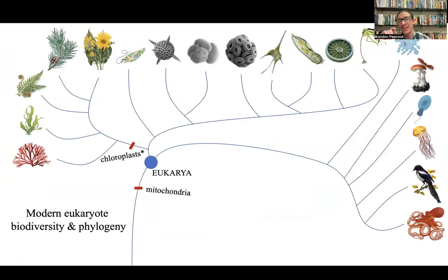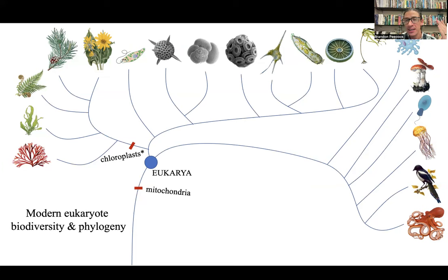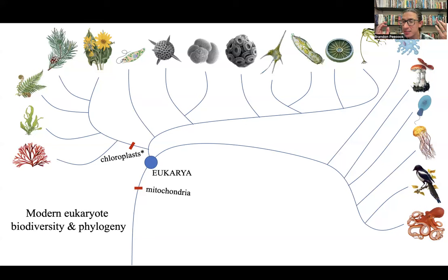Now let's look at this eukaryote phylogeny. This is a phylogeny of all kinds of eukaryotic lineages — set the archaeans and bacteria out of your mind. These are the eukaryotes. What do you recognize? What don't you recognize? There's a blue circle at the common ancestor of eukarya, and everything after that split counts as a eukaryote — those ferns and pines on the left, the octopus and the magpie on the right, everybody on the slide is a eukaryote.